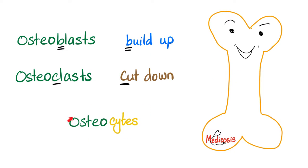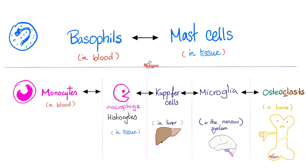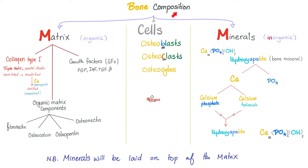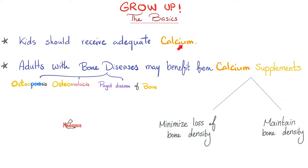What are the cells in your bone? Osteocytes, osteoblasts to build up bone, and osteoclasts to cut down bone. Don't forget that osteoclasts have the same origin as macrophages, monocytes, Kupffer cells, or microglia — these are cells that eat up stuff. Bone structure requires cells, matrix, and minerals. The matrix is mostly type 1 collagen. The cells are osteoblasts, osteocytes. The minerals — calcium and phosphate, collectively known as hydroxyapatite crystals. Calcium is very important for bone health, especially if you're growing up or if you have a bone disease. Bones have metabolic functions by providing calcium and phosphate homeostasis.